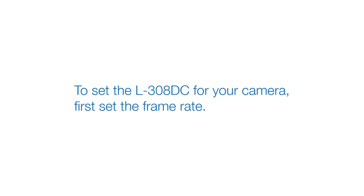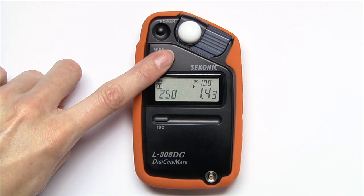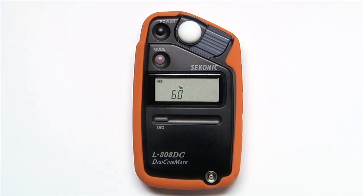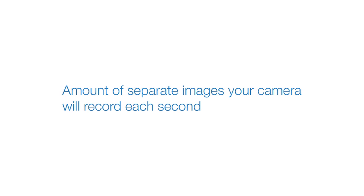To set the L308DC for your camera, first set the frame rate that the camera will be using. To set the frame rate, press mode to select FS. FS stands for frames per second — that's how many separate images your camera will record each second it is running.